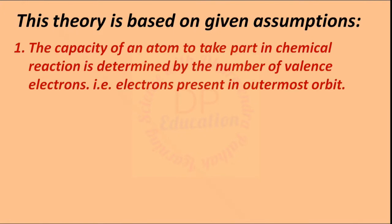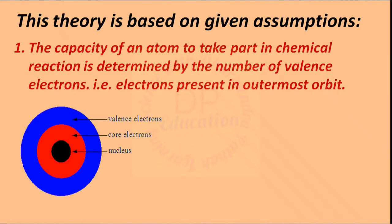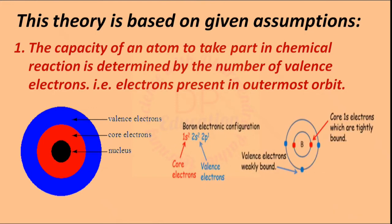The capacity of an atom to take part in chemical reactions is determined by the number of valence electrons — that is, electrons present in the outermost orbit. Electrons present inside the valence shell are called core electrons, and electrons present in the outermost shell are called valence electrons.